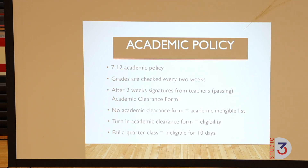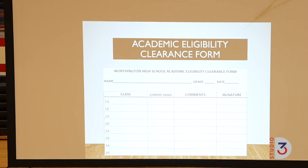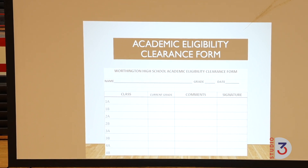Academic policy: every two weeks we send out a grade report. If you're on a failing grade, you're ineligible until you turn in a form. You get this from the high school or middle school office, go around and have all your teachers sign saying you're passing, then turn it back in and you become eligible again. The next two-week period, if you're failing again, that process starts all over. We're not just athletes — we need to be student athletes. Only one percent of people here are going to go on to play college sports, so the student piece is more important than the athletic piece.